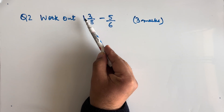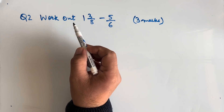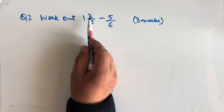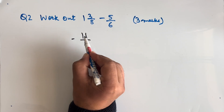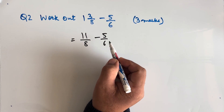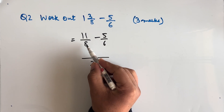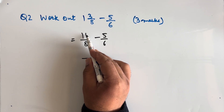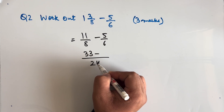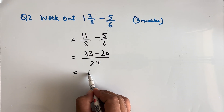Question 2: Work out 1 and 3/8 minus 5/6. 1 and 3/8 can be written as 11/8. So we have 11/8 minus 5/6. We take the LCM of 8 and 6, which is 24. The numerator becomes 33 minus 20, giving us 13/24 as our answer.